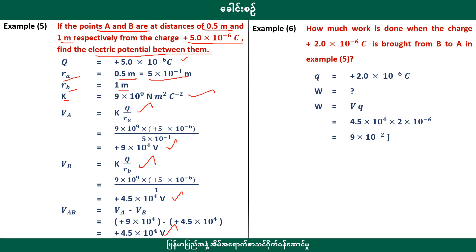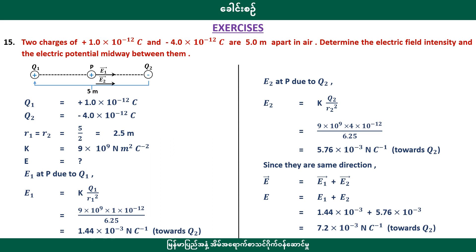How much work is done when the charge moves from A to B? Work done W equals q times Vab. Using the values: 4.5 into ten to the power 4, 9 into ten to the power 9, 2.5 into ten to the power 4, then 3.5 into ten to the power 5. The power of 5 gives us 3.5 into ten to the power 5, and 4.5 into ten to the power 5.